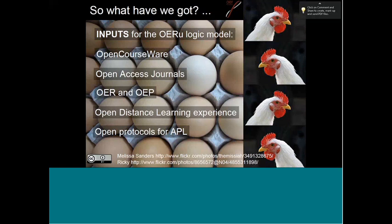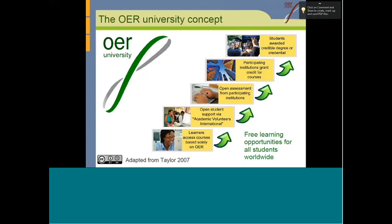What have we got so far in building this OER University? We have literally thousands of courses published as open courseware, thousands of open access journals, and a growing inventory of OERs with increasing knowledge around open education practices. We have more than 70 years of organizational experience in providing learning at a distance, and the majority of our institutions already have existing policies in place for recognition of prior learning.